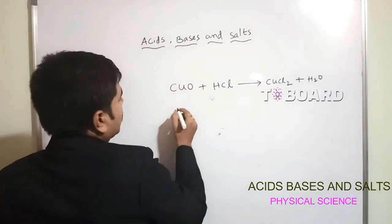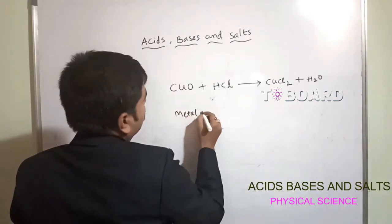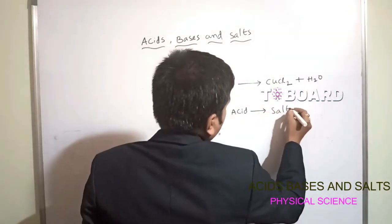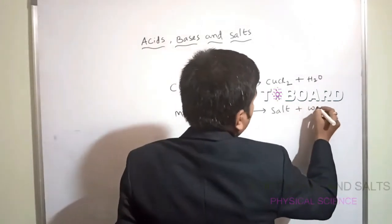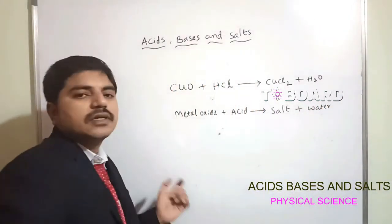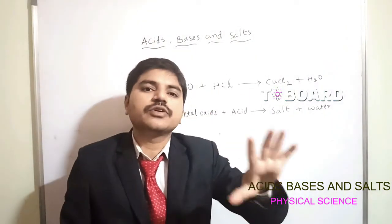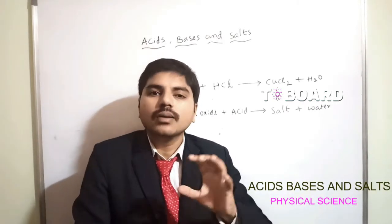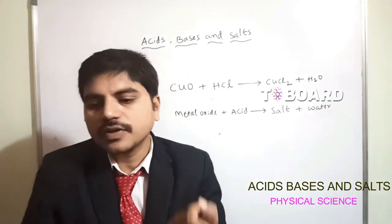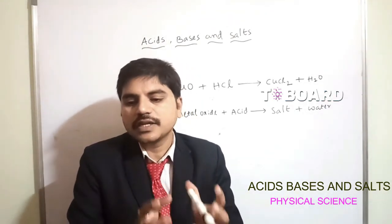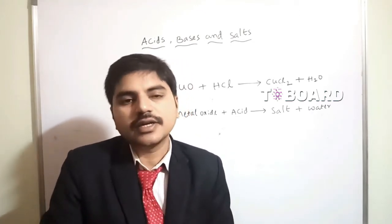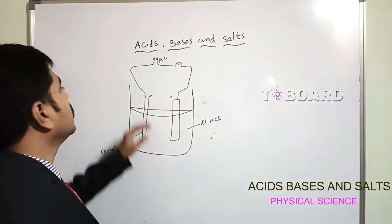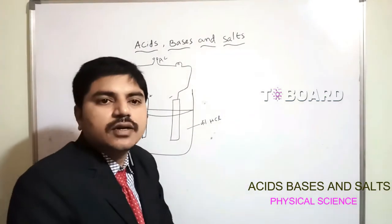From this activity, we conclude that metal oxides behave like bases. That is why metal oxides react with acids to give salt and water, similar to how bases react with acids. Metal hydroxides also contain basic nature.